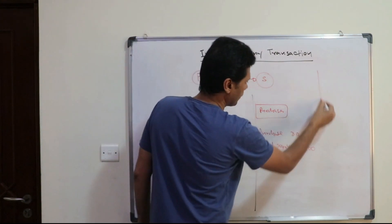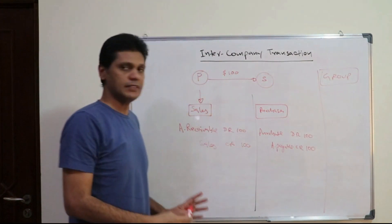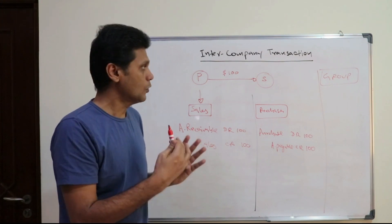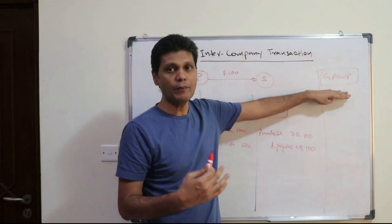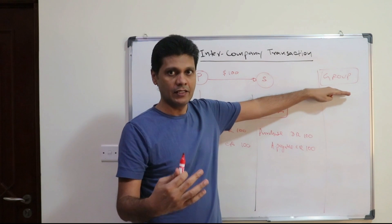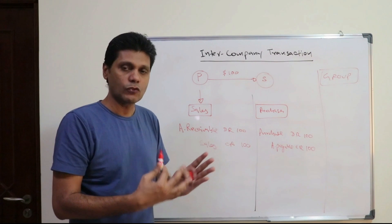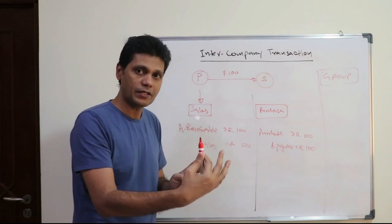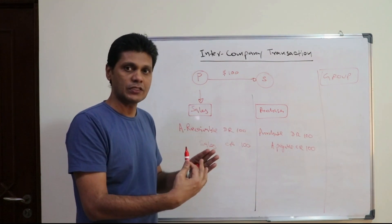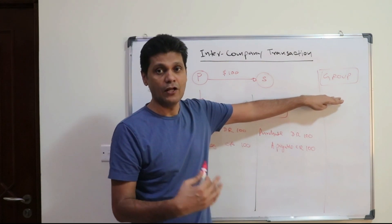This is how this particular transaction will be recorded in their separate financial statements. When it comes to the group, what is the impact on the group financial statement? The group is treated as a separate single economic entity. As a result of that, the transactions within the group have to be eliminated. Whatever transactions they have done with an outside party will be recorded in the group, but within-group transactions have to be eliminated, because as far as the group is concerned, the group has made neither a sale nor a purchase.